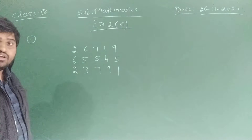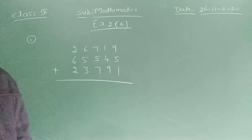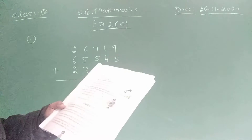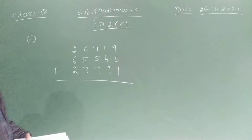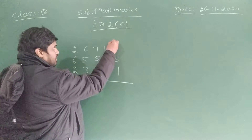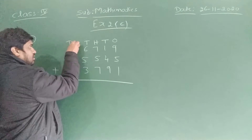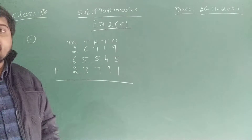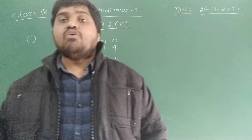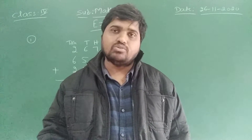Therefore, total — we have to add. See children, before adding, first note the place values: ones, tens, hundreds, thousands, ten thousands. Before going to add, you have to arrange the places — ones, tens, hundreds, thousands, ten thousands. Then, according to the property of addition, first we have to add ones, next tens, next hundreds, next thousands, next ten thousands.